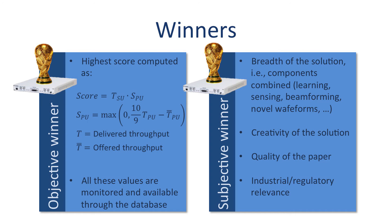Two winners will be selected among the competing teams. A first winner will be determined following a metric balancing secondary user throughput and primary user satisfaction. A primary user reaches zero satisfaction if 10% of throughput is lost. The metric is monitored on the database. A second winner will be selected by a jury based on external reviews of the paper, with a focus on creativity of the solution.